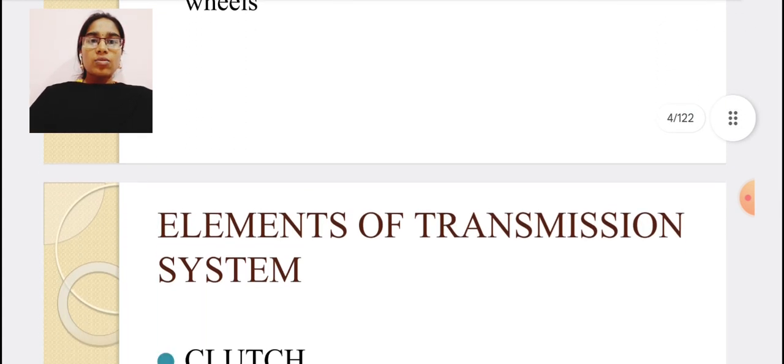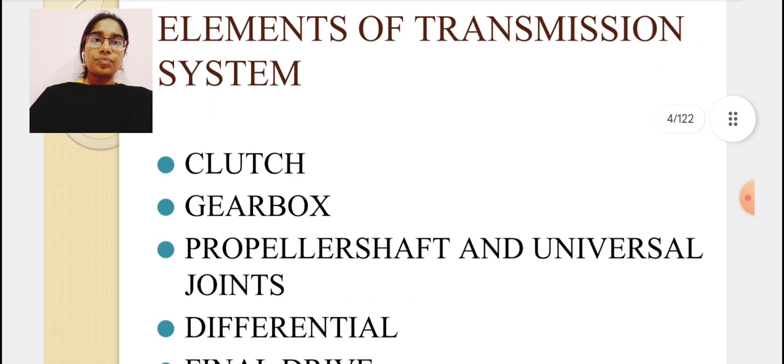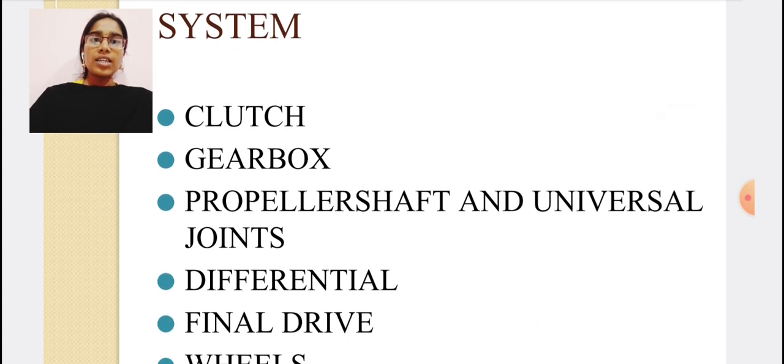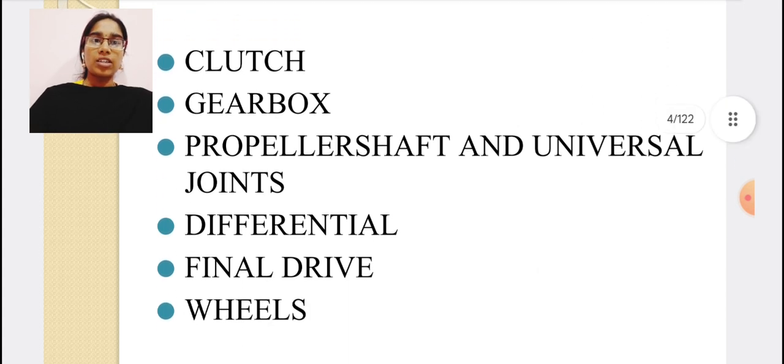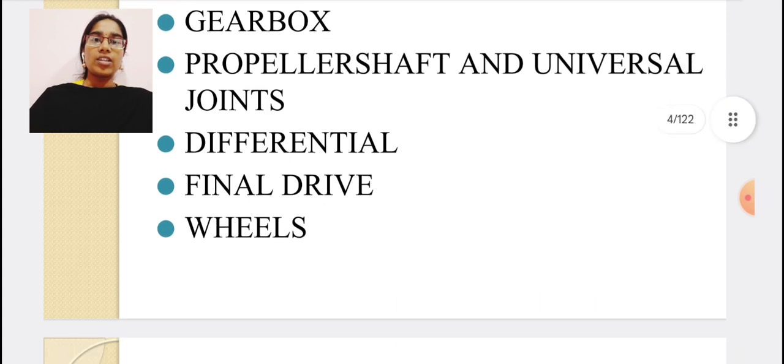Next, elements of transmission system. The transmission system needs many components and elements, which are clutch, gearbox, propeller shaft, universal joints, differential unit, final drive, and wheels.